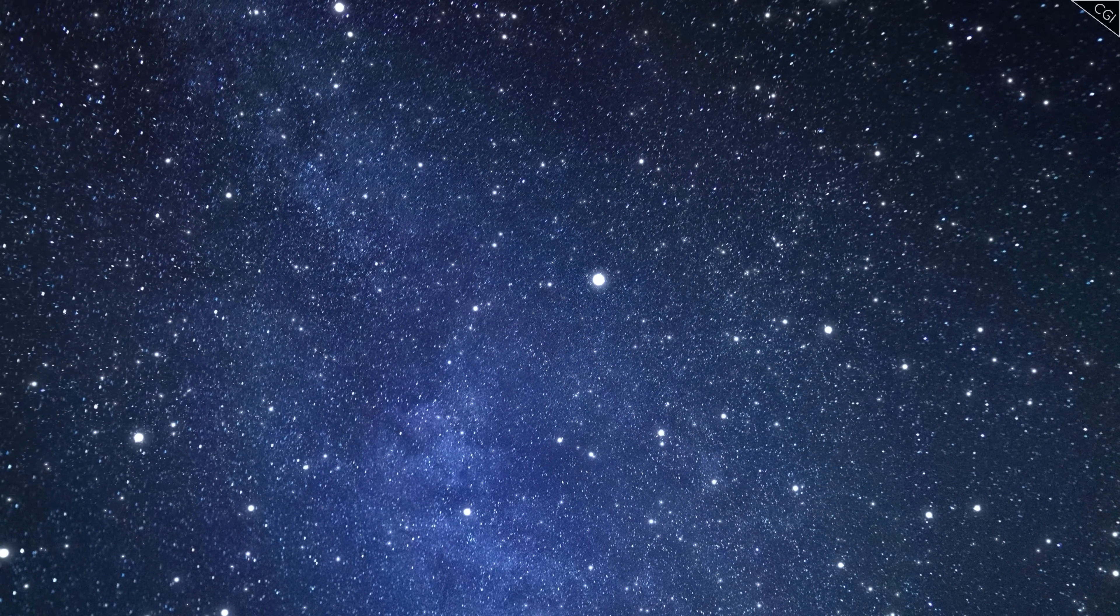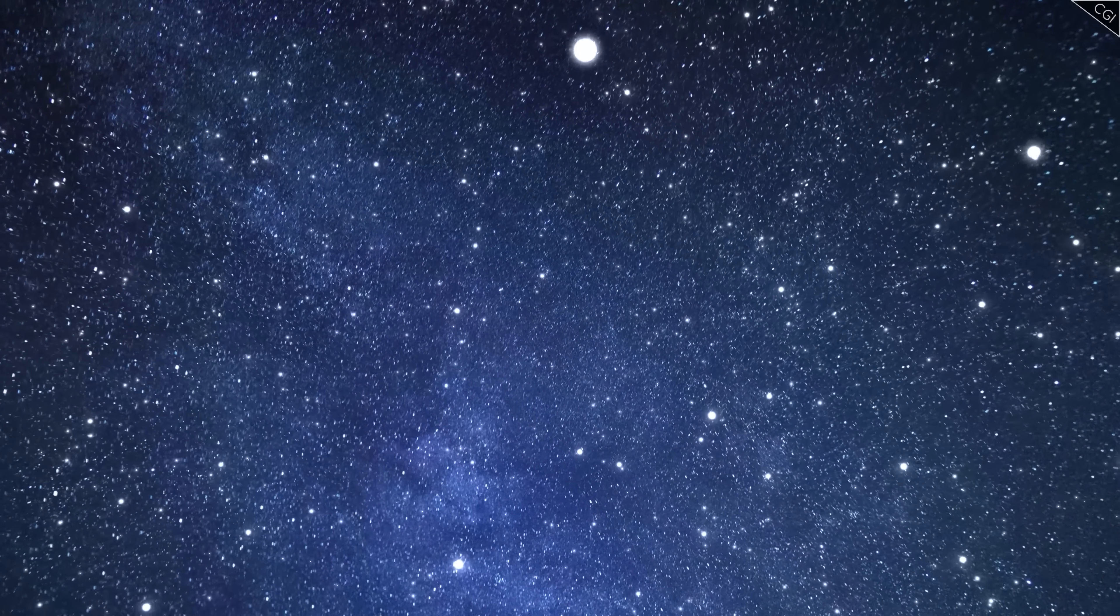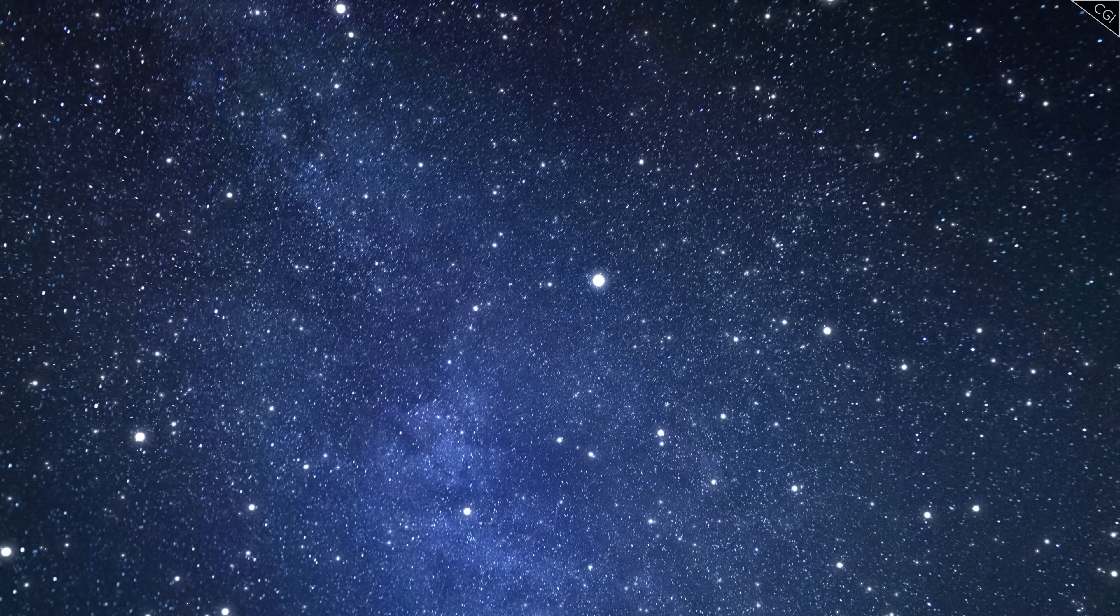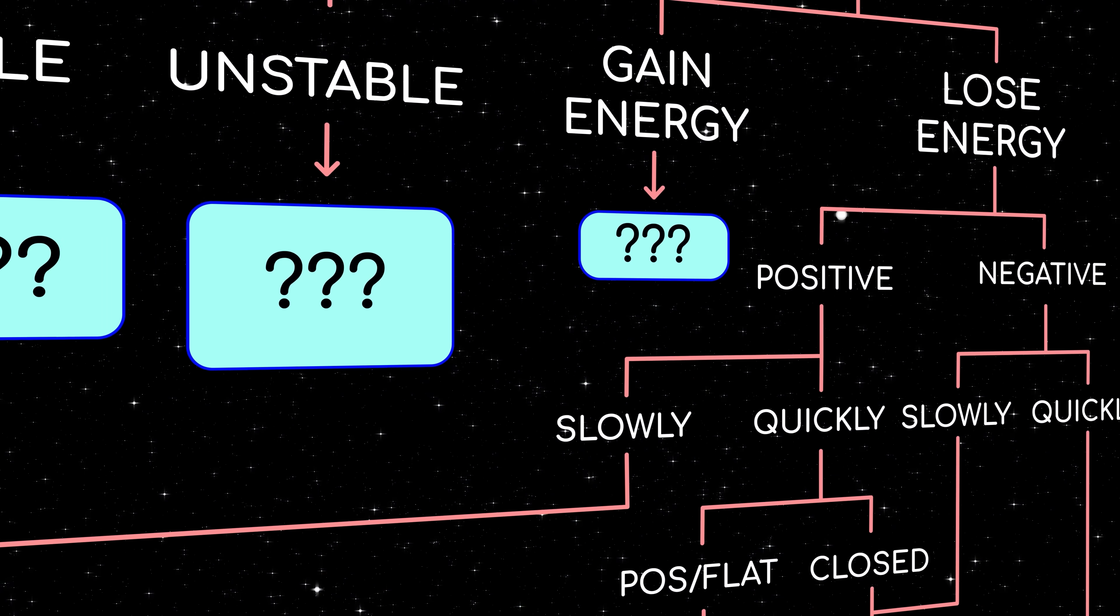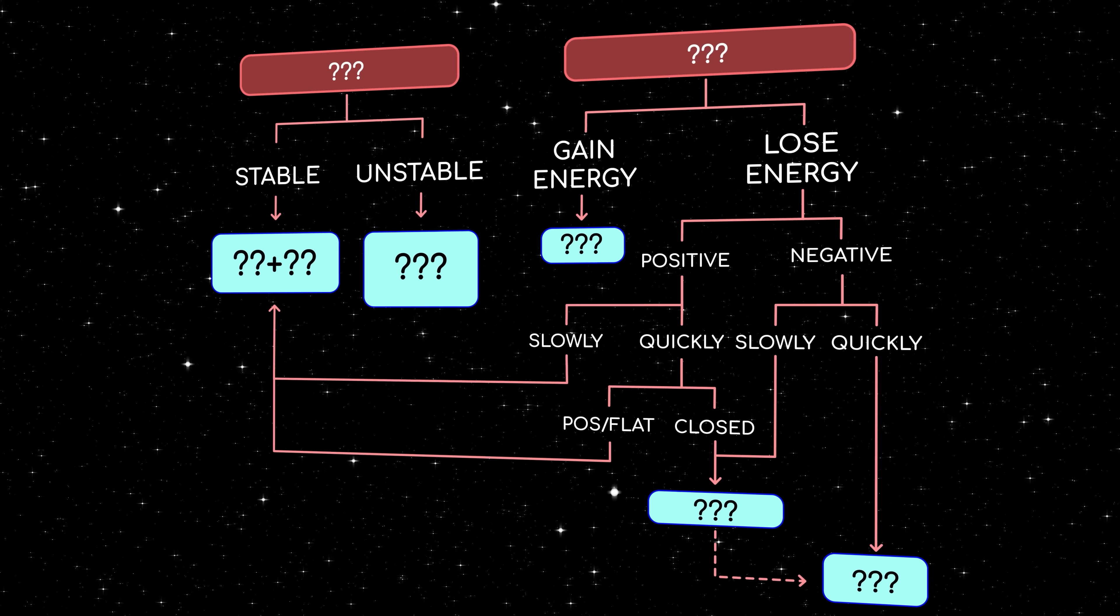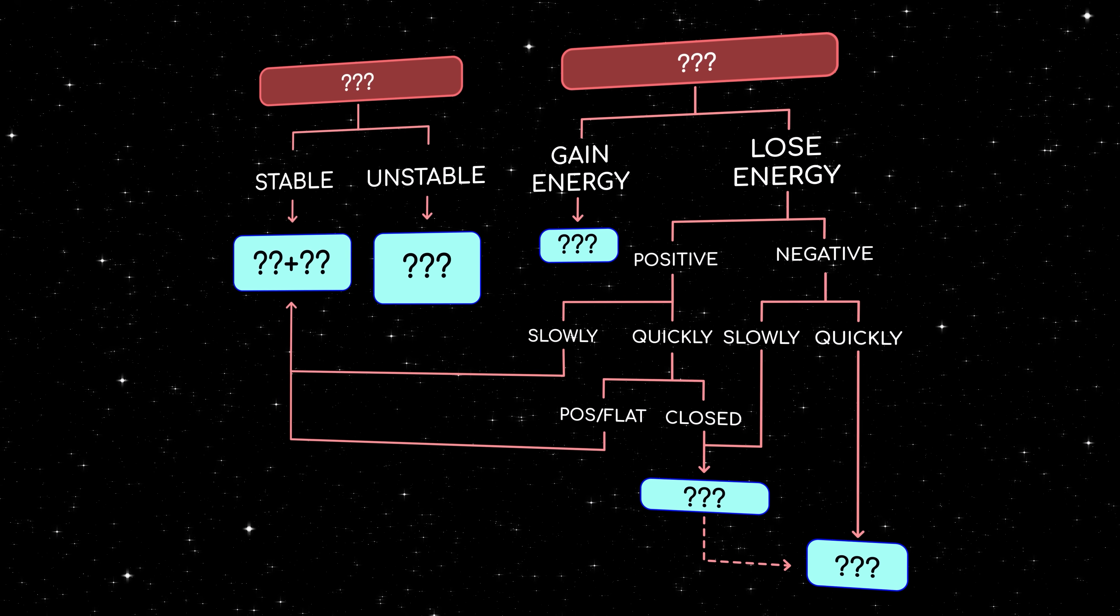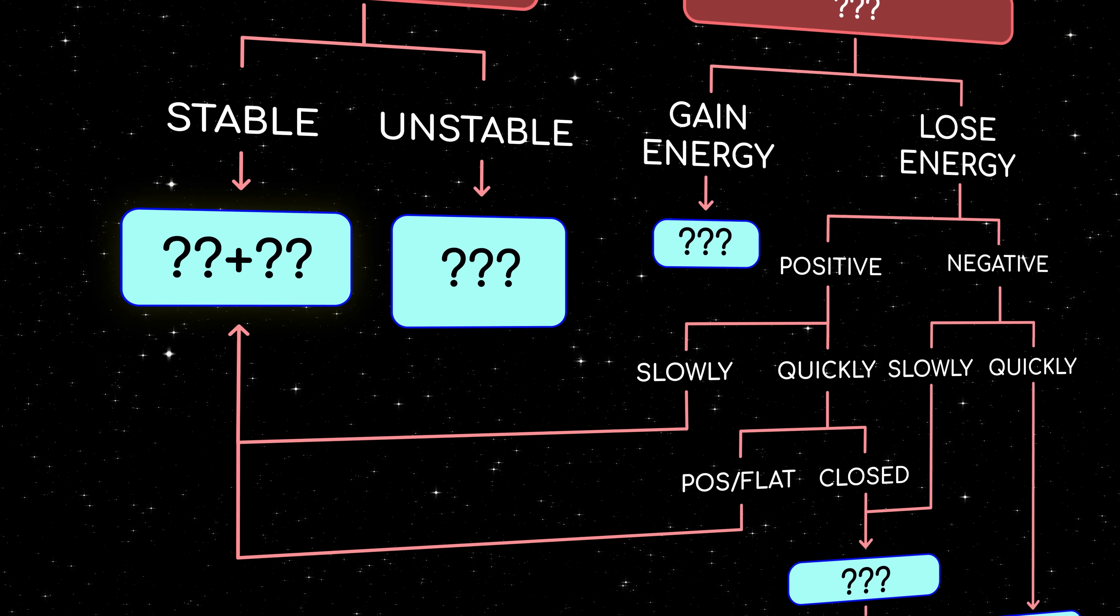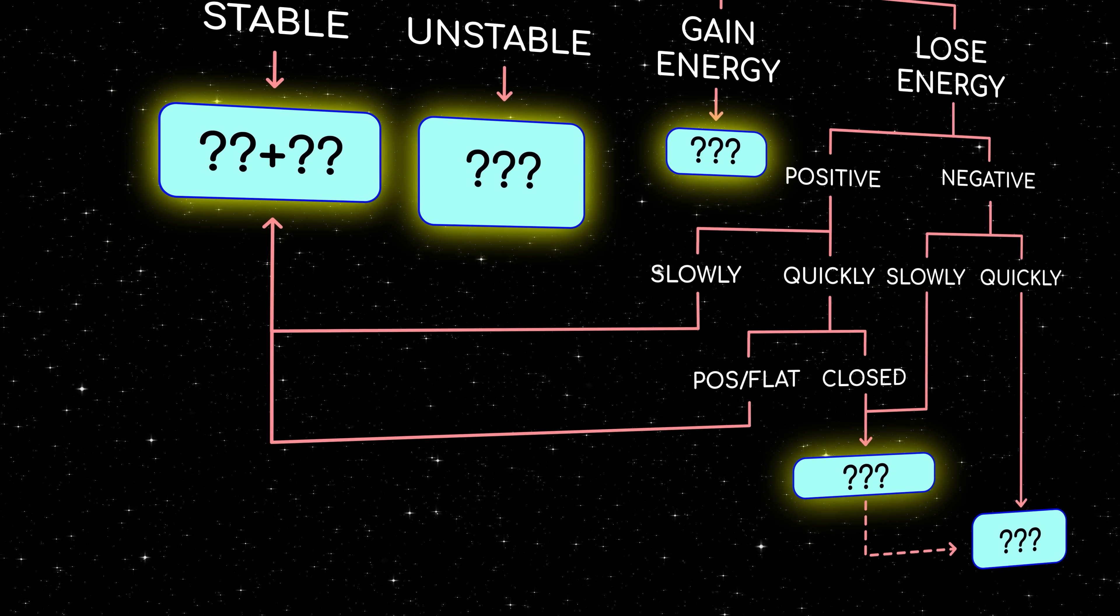Depending on the nature of dark energy, the accelerated expansion of the universe can grow stronger, settle down, or even reverse course. Rather than making a video on just one of these fates, we've decided to collect them all into one big flowchart, to serve as your one-stop guide to the end of the universe. At the top of the flowchart is what dark energy is, and at the bottom is how we all die.